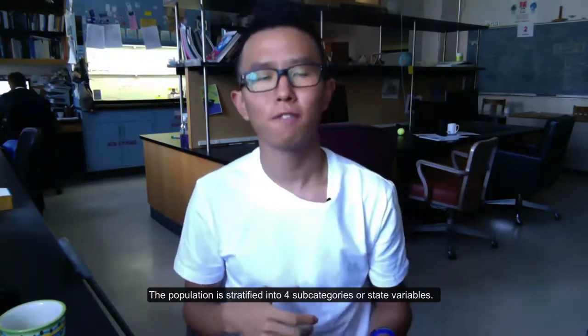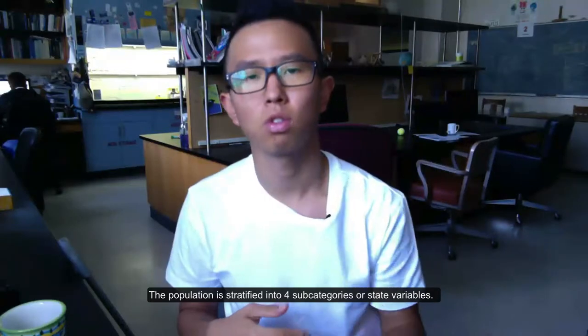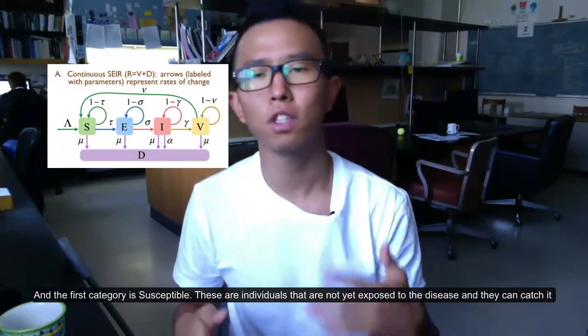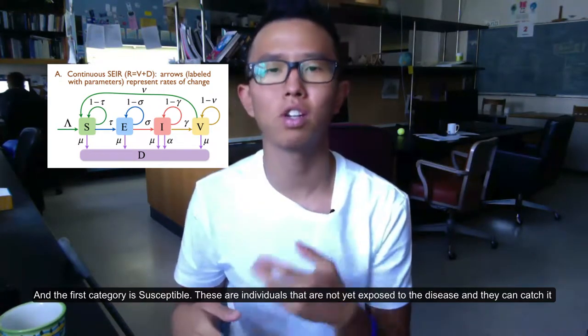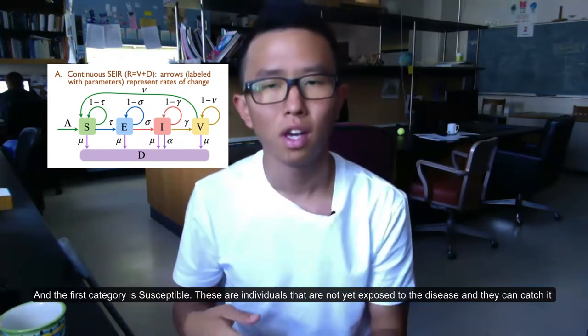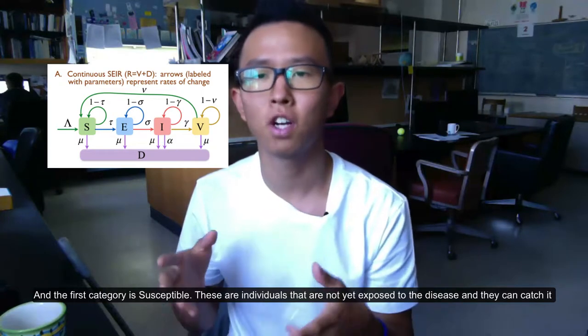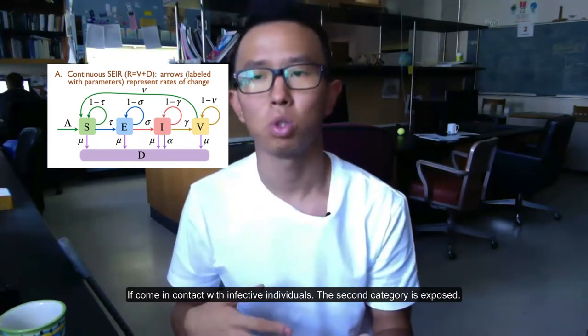The population is stratified into four subcategories or state variables. The first category is susceptible. These are individuals in the population that are not yet exposed to the disease and they can catch it if they come in effective contact with infected individuals.